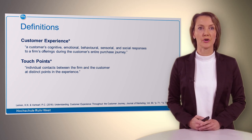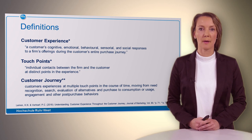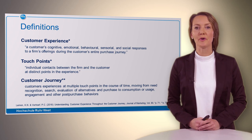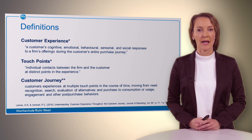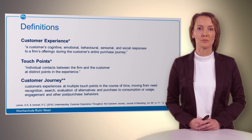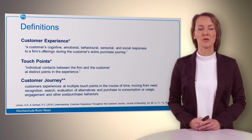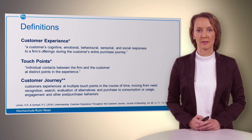The customer journey puts that all together. It is the experiences of a customer at multiple touch points — usually several contacts between company and customer over time. It is dynamic, moving from need recognition, search, evaluation of alternatives, purchase to consumption or usage, engagement, and post-purchase behaviors. This is all very theoretical, but we now want to give you a full model where you can really understand what the customer journey and touch points are, and where the customer experience is happening.